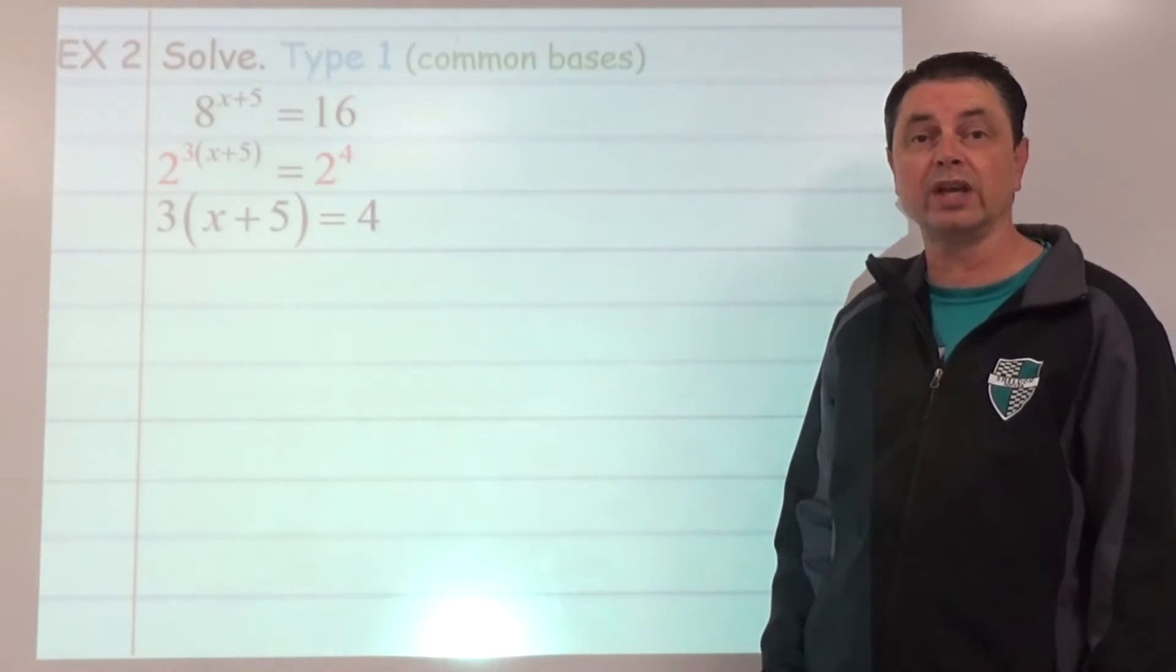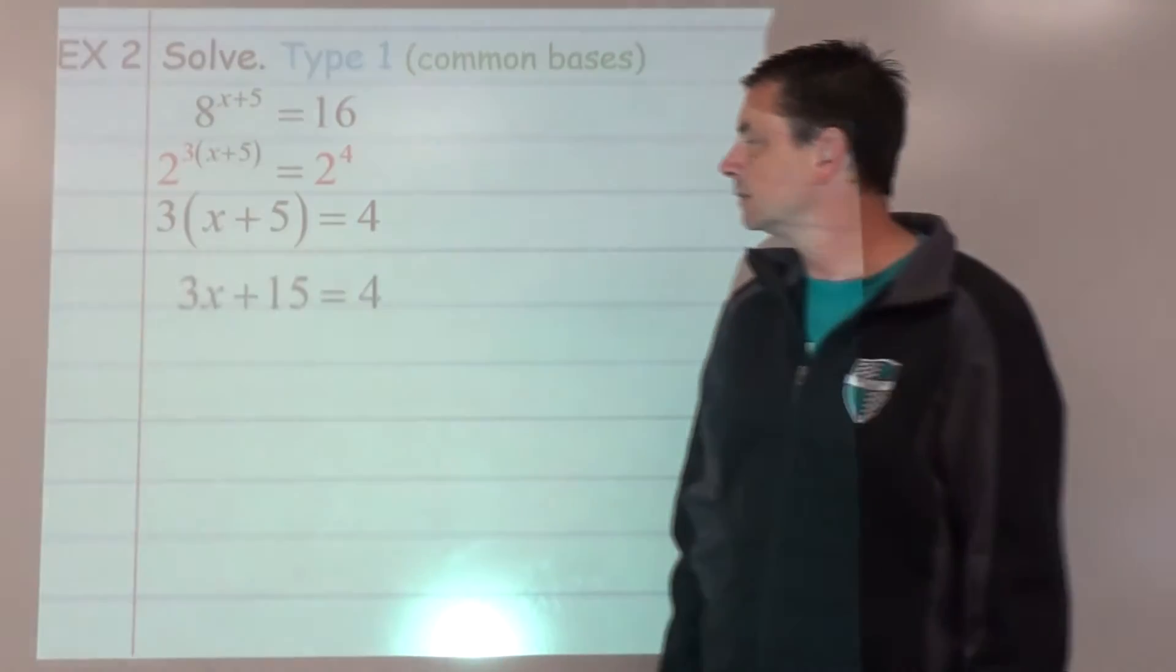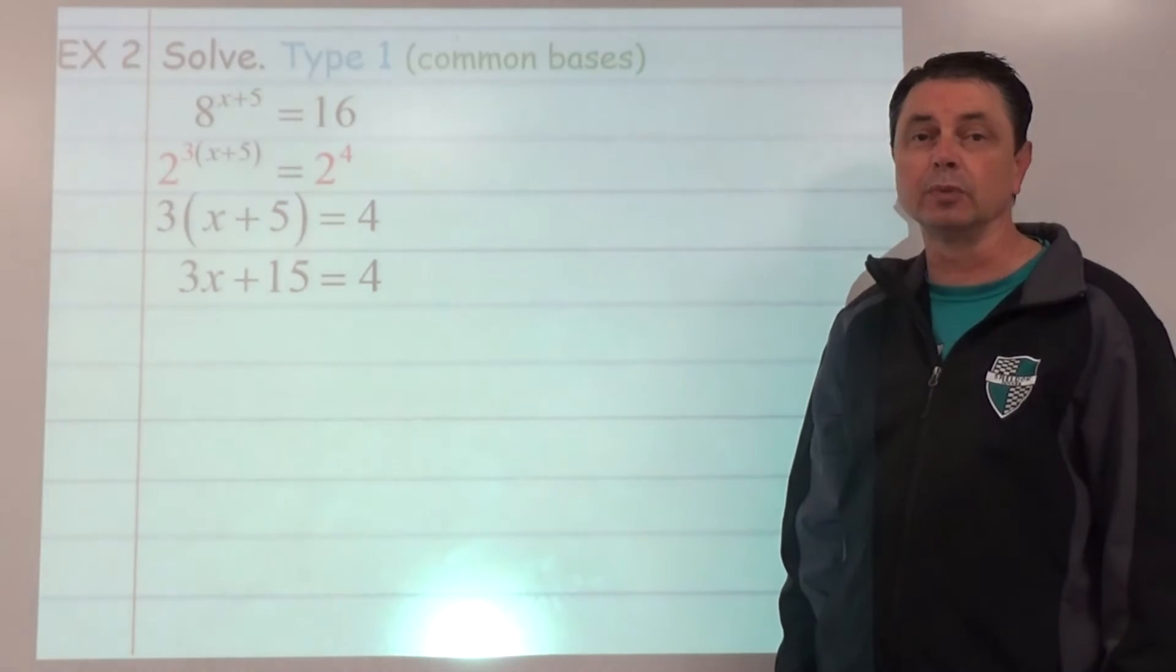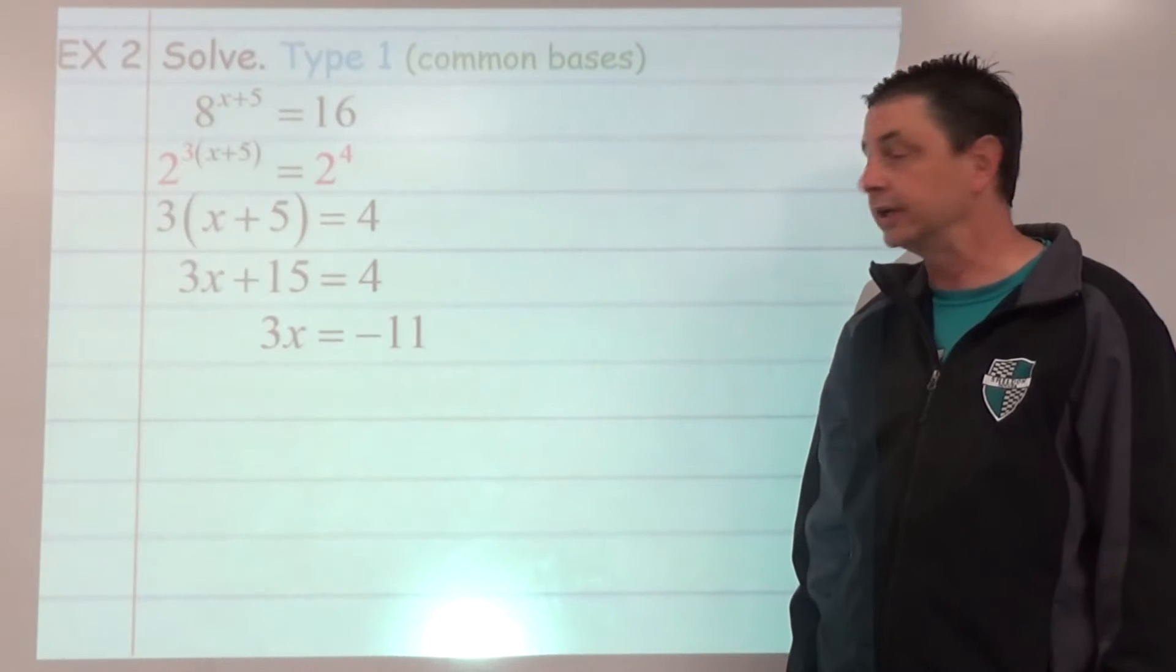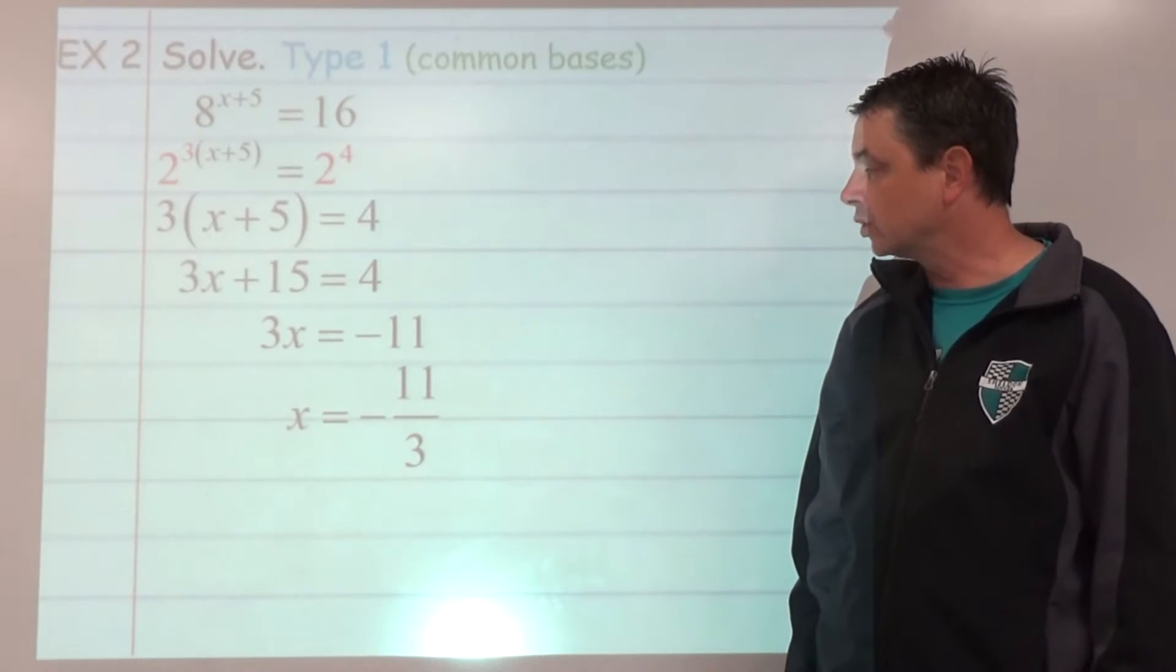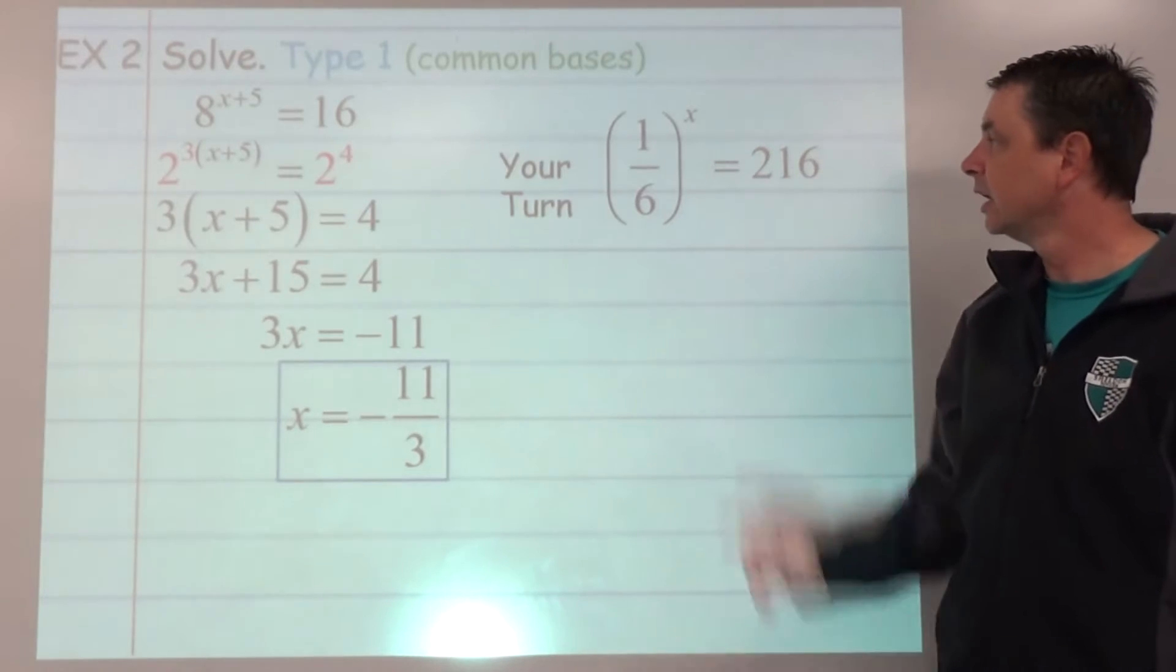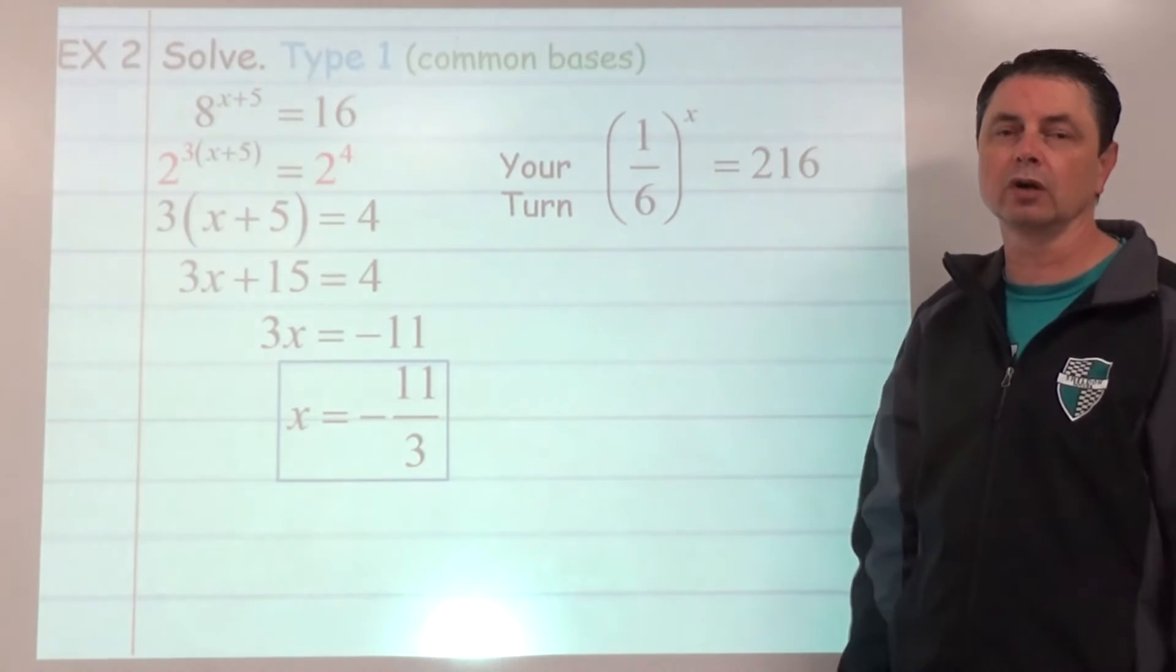There's multiple ways of solving this equation. One would be to distribute and then subtract 15 on both sides, and then divide by 3. So x would equal negative 11 thirds. It's your turn. Go ahead and pause the video here as you work through the problem.